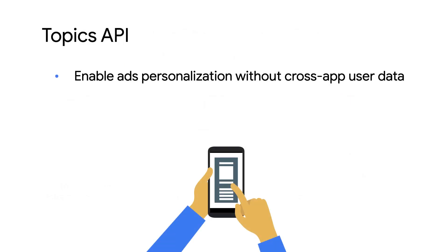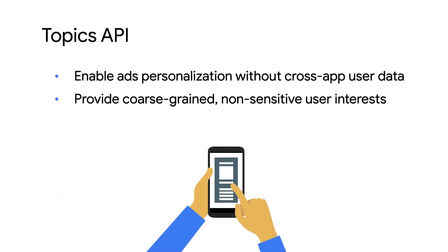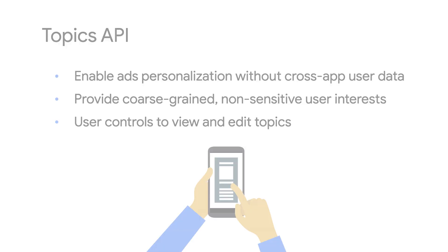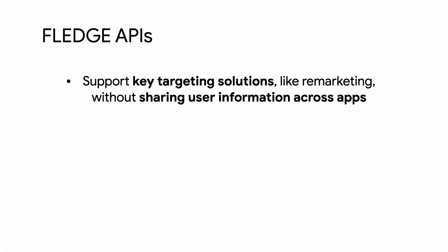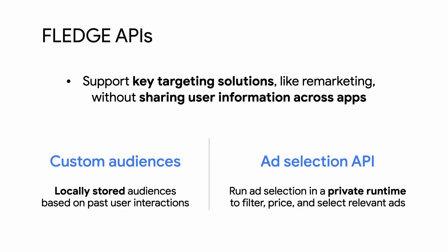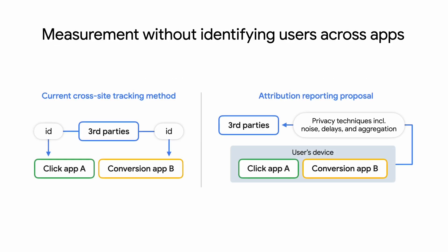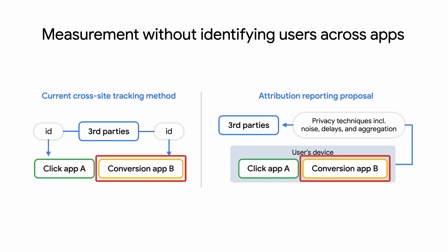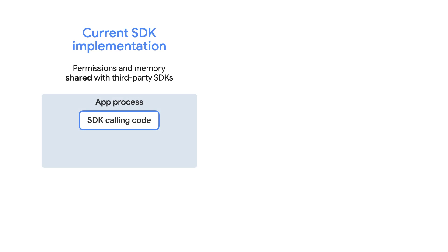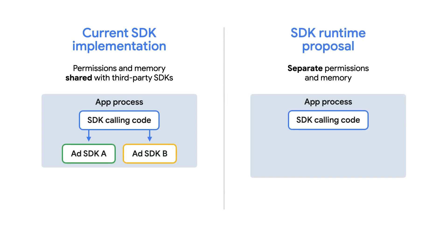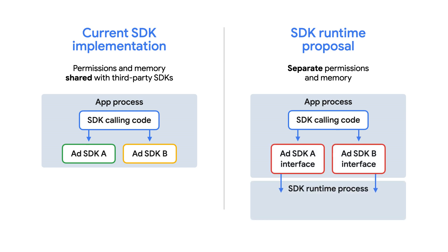Our Topics and FLEDGE APIs facilitate targeted advertising based on user interests and previous engagement with your apps. Users have transparency and control over these, while the solutions themselves also provide improved privacy. With attribution reporting, you can measure when an ad click or view event leads to a conversion, such as the download of a new game. And finally, the SDK runtime provides stronger safeguards and guarantees around user data collection and sharing by limiting the level of data access by third parties.